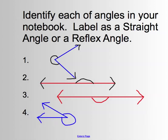Now, I want you to identify these angles in your notebook and you're going to label 1 through 4 and you're either going to put down a straight angle or a reflex angle. And I want you to spell out the entire word. Looking at the arc.